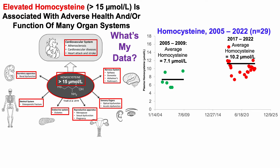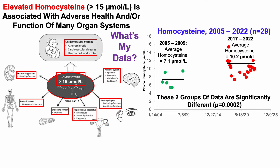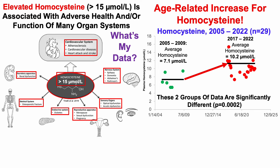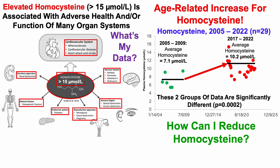When I started measuring again in 2017, I started measuring a lot more often. I have 23 blood tests since 2017, and my average homocysteine over that period is 10.2 micromolar. Besides just looking at averages between two different time periods, I compared them with a two-sample T-test, and these two groups of data are significantly different. In other words, I've experienced an age-related increase for homocysteine, so this is going in the wrong direction.